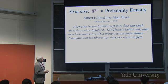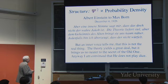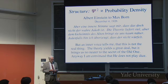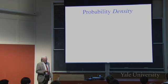Six months later, Albert Einstein wrote to Max Born: 'an inner voice tells me this is not the real thing. Theory yields a great deal, but brings us no nearer to the secret of the old one. I'm convinced that he does not play dice.' Einstein believed in fundamental determinism. But in this respect Einstein was wrong — it is probability.